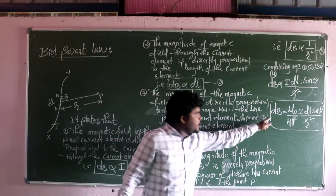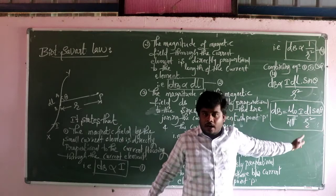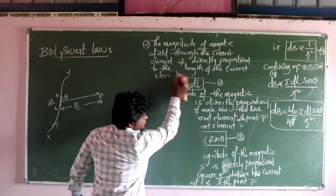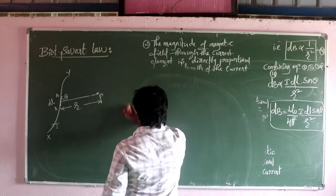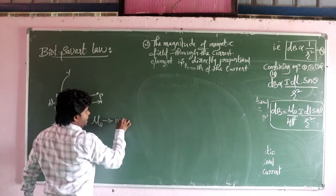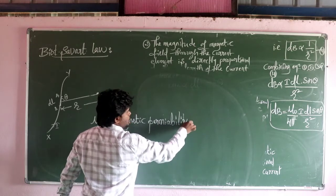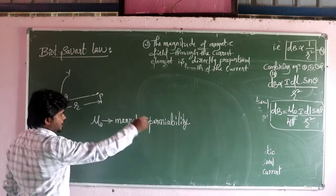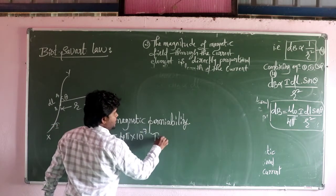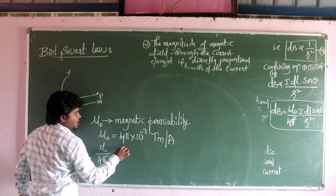Okay students, you have just studied about the Biot-Savart law and the equation form of the Biot-Savart law. That is dB equal to mu0 divided by 4pi, i dl sin theta divided by r square. Mu0 divided by 4pi is the constant of proportionality, where mu0 represents the magnetic permeability of free space. The value of mu0 is 4pi into 10 to the power minus 7 tesla meter per ampere.